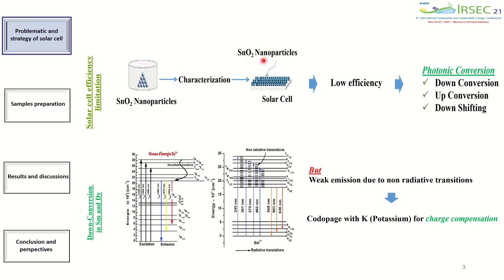We plan to produce SnO₂ powders, which will be characterized by specific methods for future use in PV cells. However, the limits of silicon cell performance are in part due to the poor overlap of the solar spectrum and the absorption spectrum of silicon. One of the keys to increasing the yield is to convert part of the solar spectrum to adapt it to the width of the band gap of silicon.